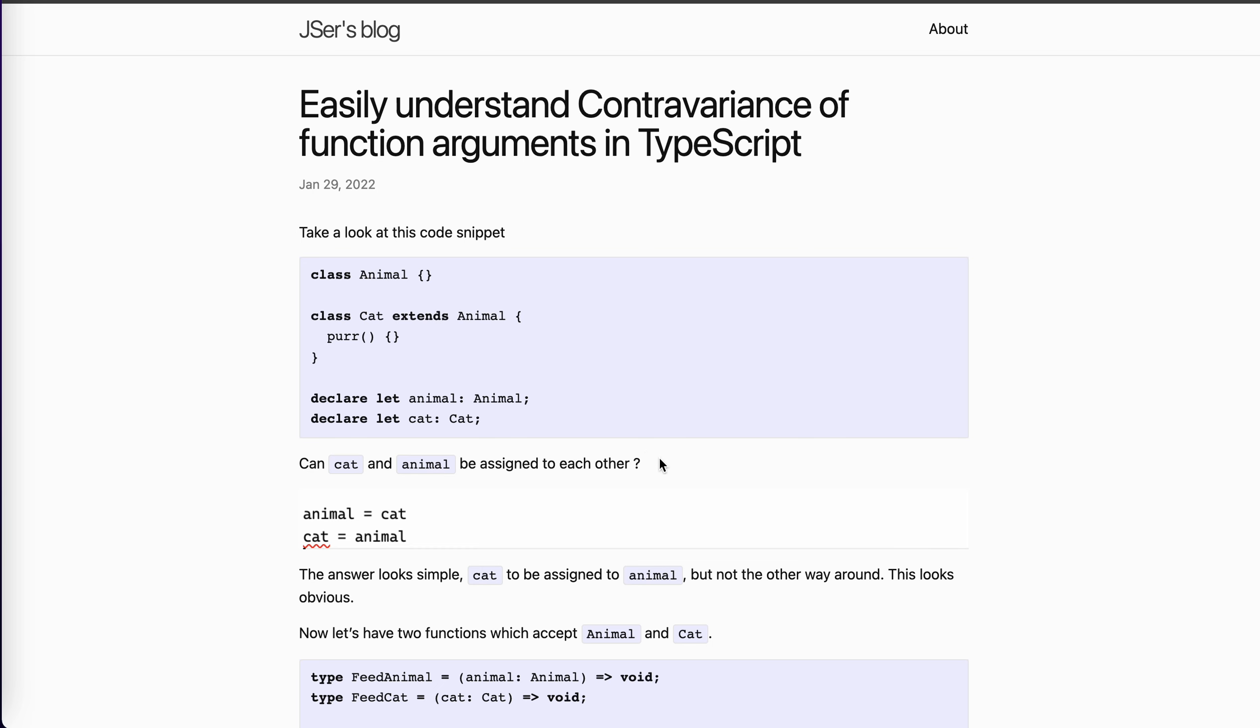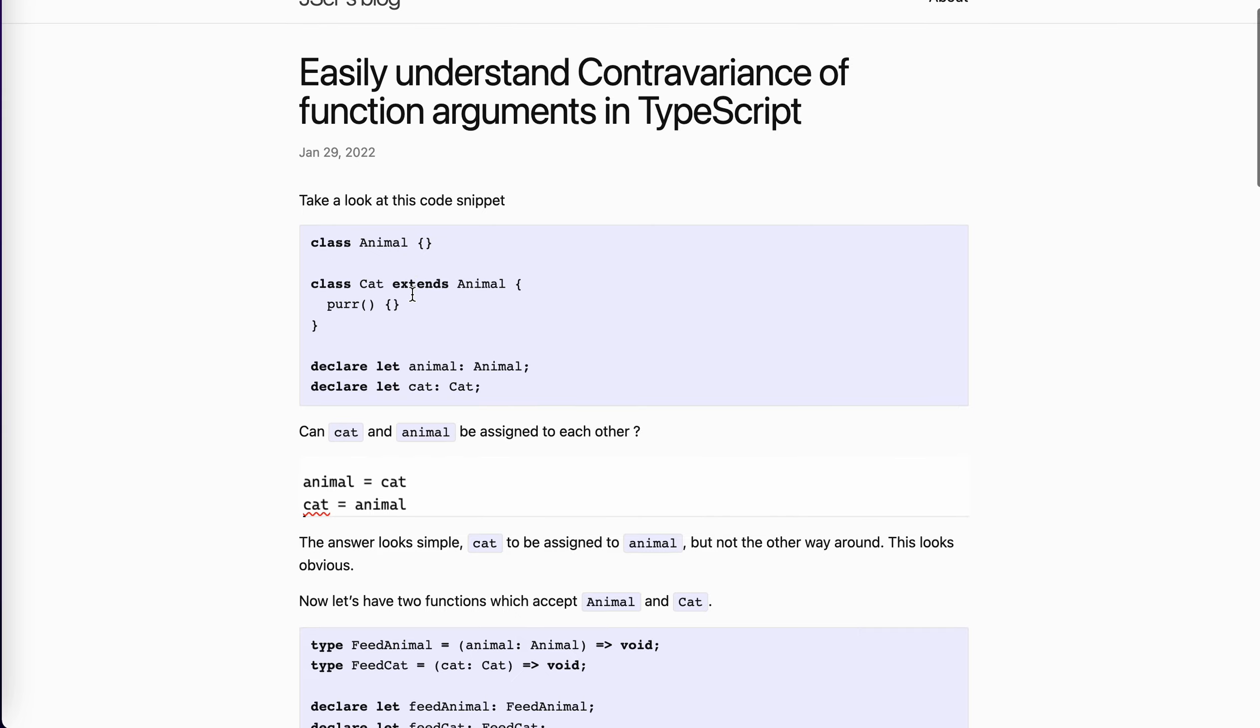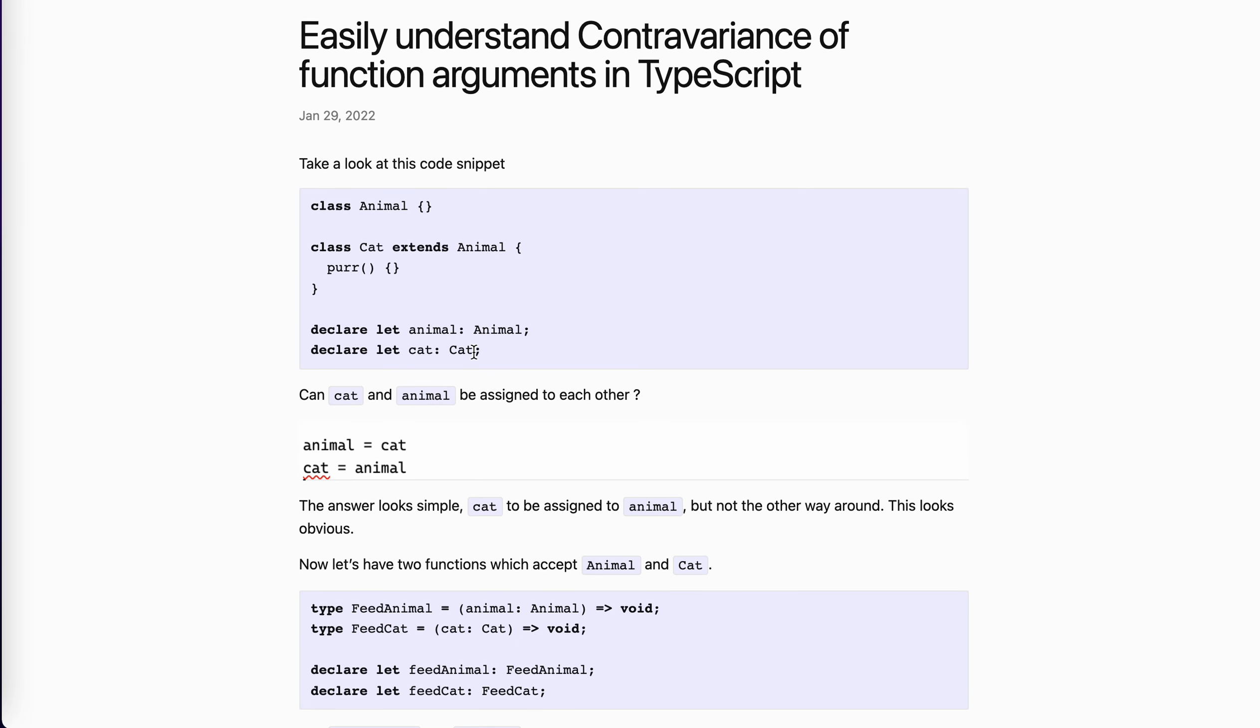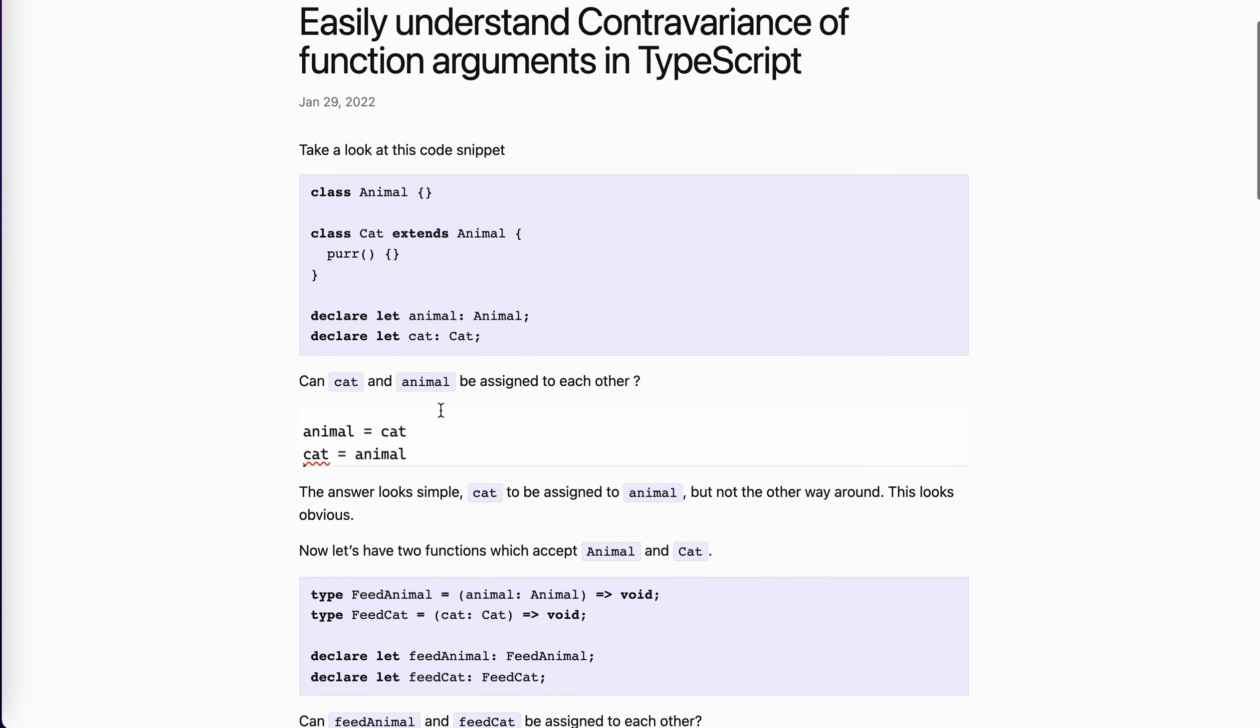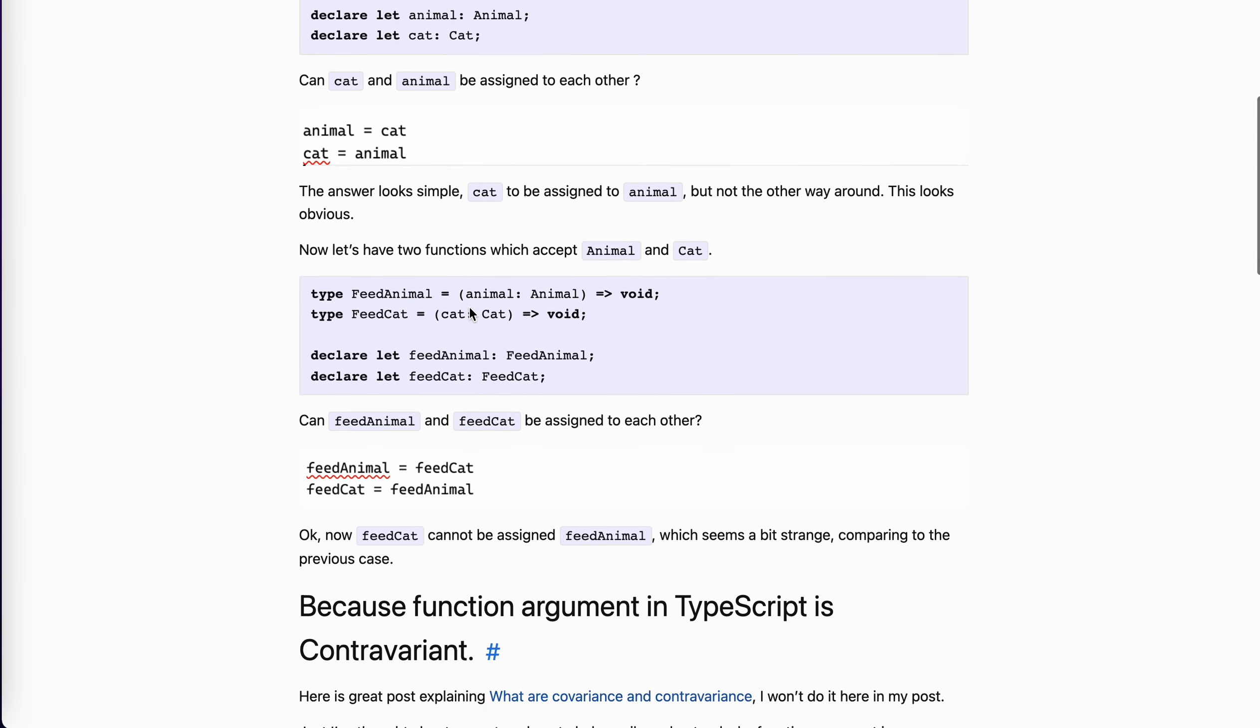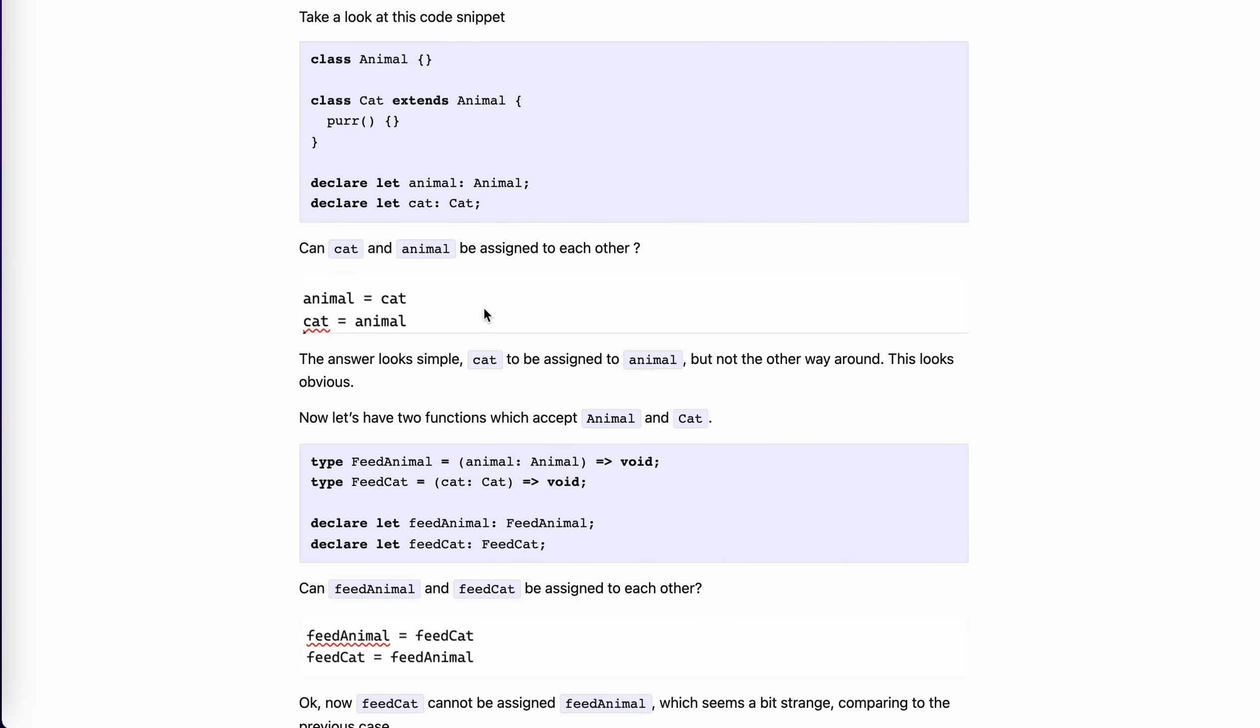So let's first take a look at this code snippet. We have an Animal and we have a Cat, just extends it. Now we have two variables: animal, type of Animal, and cat of Cat. So can cat and animal be assigned to each other? Obviously, we can assign cat to animal, but we cannot assign it back, right? This is pretty obvious. Yeah, this is what we would think it would be.